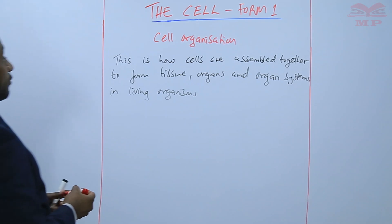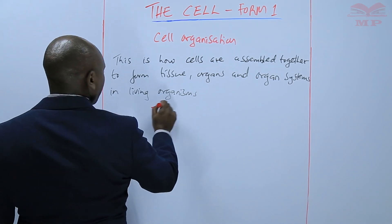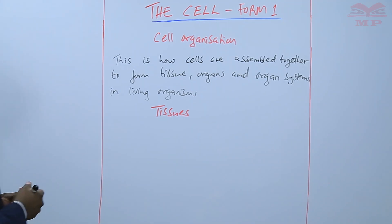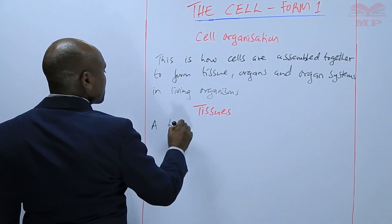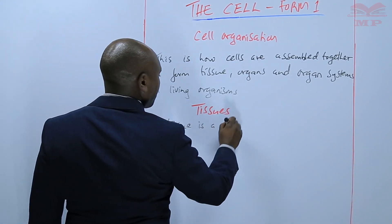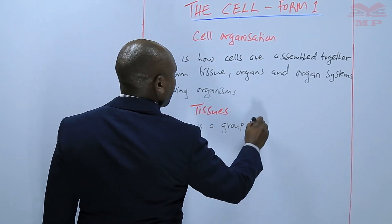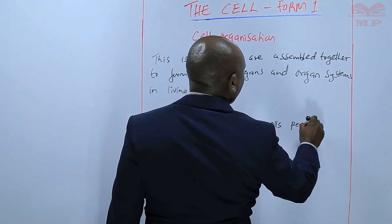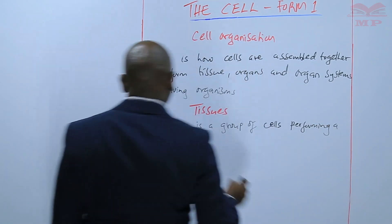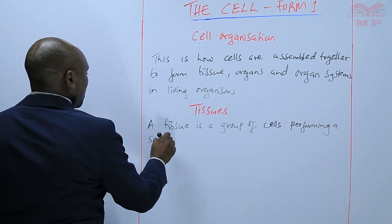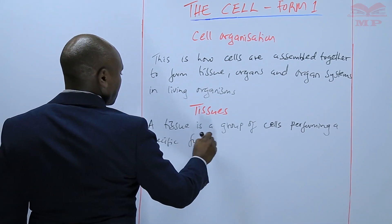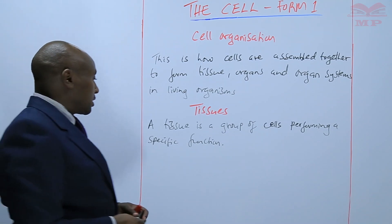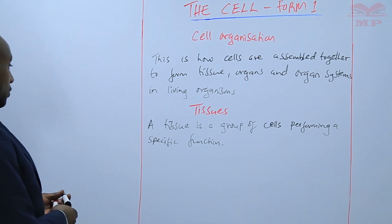The first level of organization are the tissues. A tissue is a group of cells performing a specific function. A group of cells performing a specific function make a tissue.